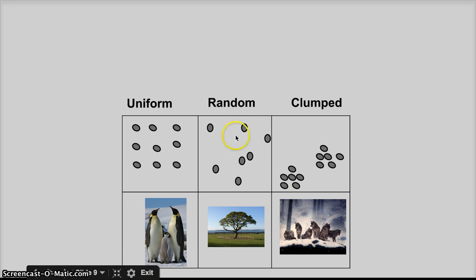And then clumped, this dispersion pattern is often because these guys survive better together. They can hunt more successfully or they can escape prey more successfully. Or that they're clumped around the resources like food and water and shelter they're using to survive and reproduce. So better resources here means more individuals in a population using this area.